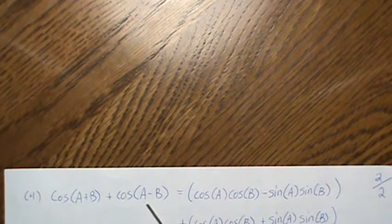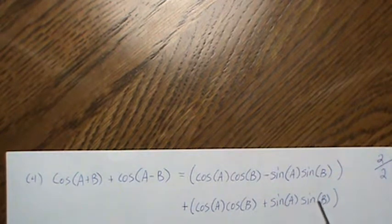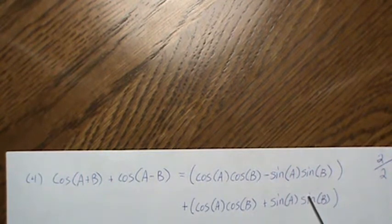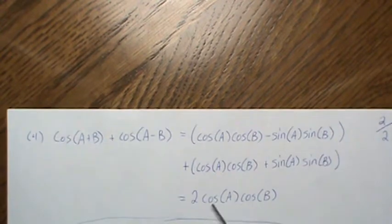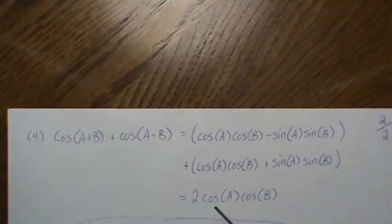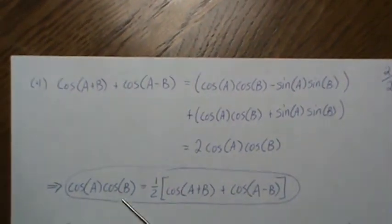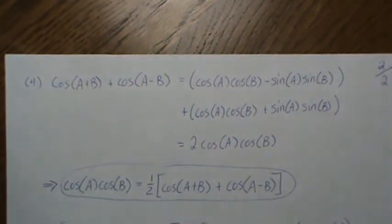Now we have the cosine of the sum of angles and also the cosine of the difference of angles. The difference identity becomes this. Since it's a minus (−b), we can bring the minus out front. Adding the sum and difference identities, the sine terms cancel and we're left with two times cos(a)cos(b). Dividing both sides by two, we get the product-to-sum identity: cos(a)cos(b) equals this. We're going to use that in the next video.